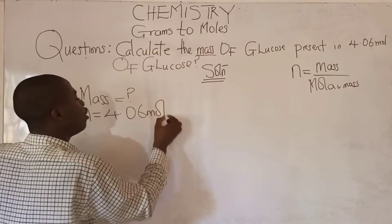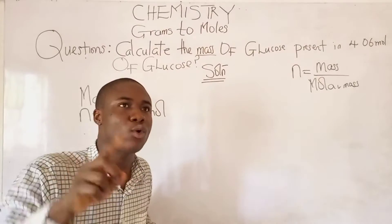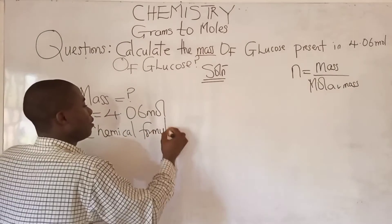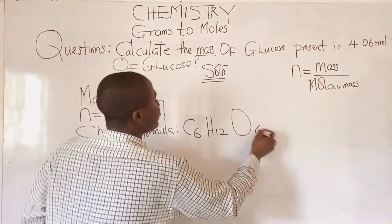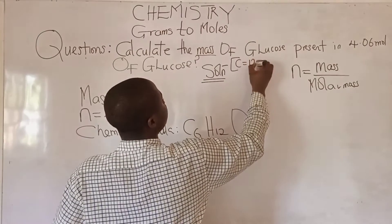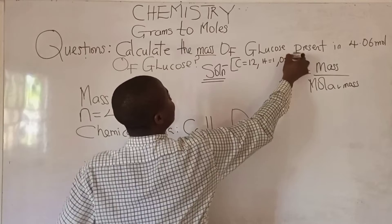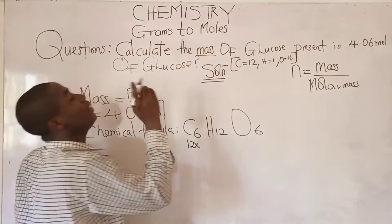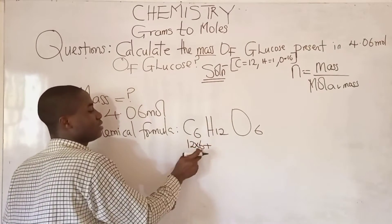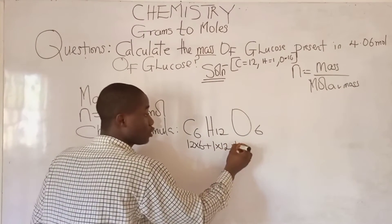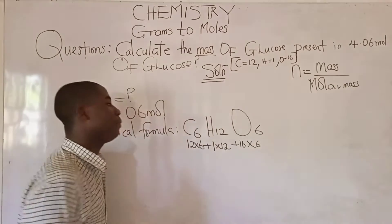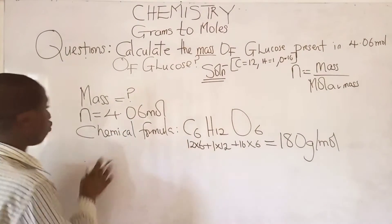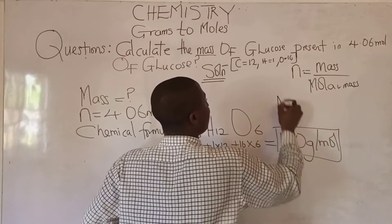First we determine the chemical formula of glucose, which is C₆H₁₂O₆, where carbon has an atomic mass of 12, hydrogen 1, and oxygen 16. To calculate the molar mass: (12 × 6) + (1 × 12) + (16 × 6). When we calculate this, the molar mass of glucose is 180 grams per mole.